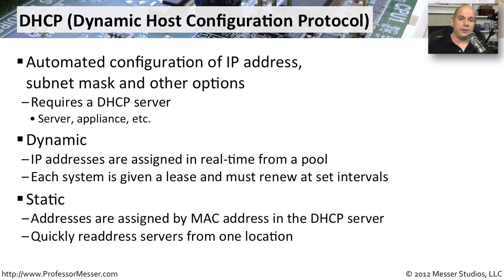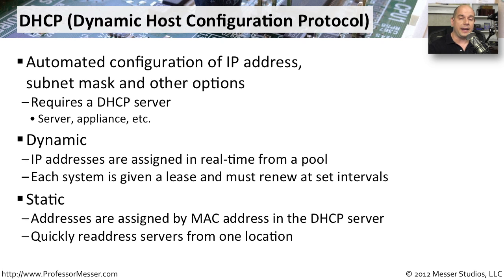Dynamic IP addresses are great for users coming in and turning on their desktop machines — they can get any IP address. But servers need to have the same IP address all the time. If you'd like to integrate them into this automated process, you can set up a static DHCP address. You simply configure the DHCP server with the MAC address of your web server, and when that server requests an IP address, the DHCP server recognizes it and provides a pre-allocated IP address that will never change and never be given to anyone else.